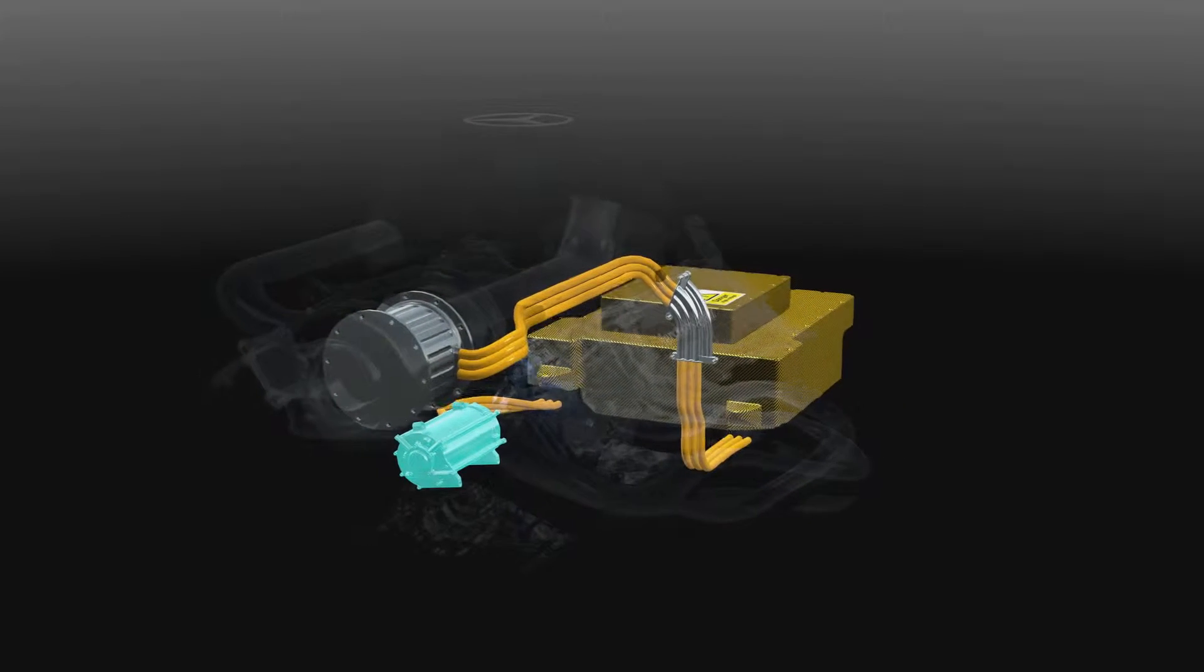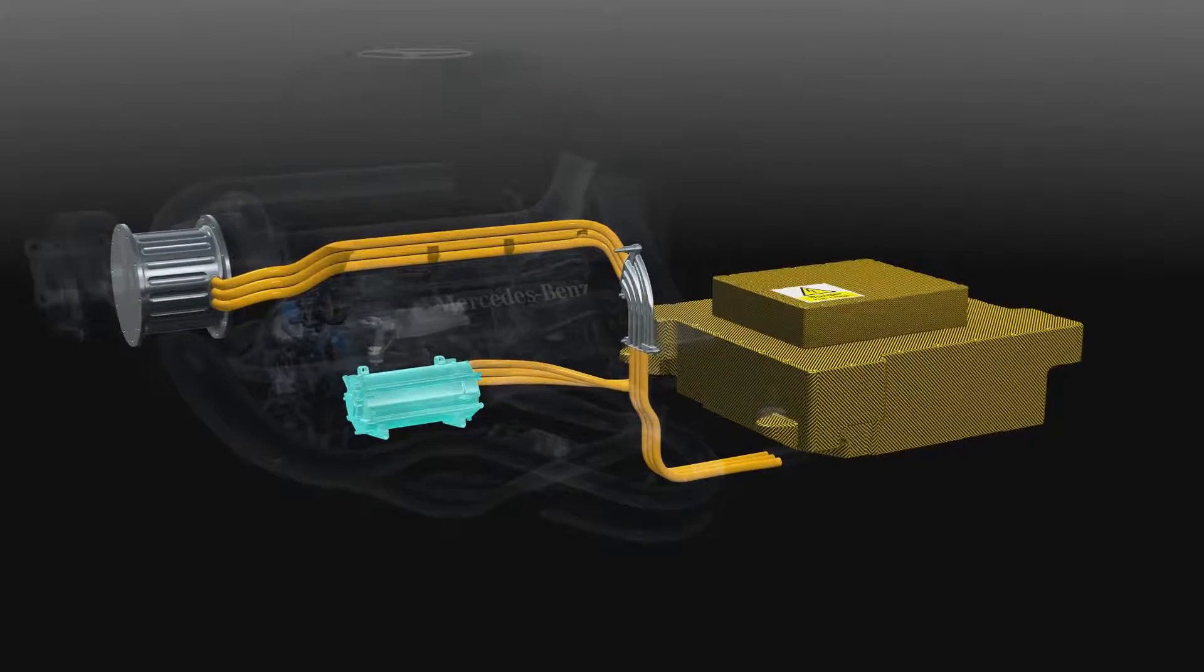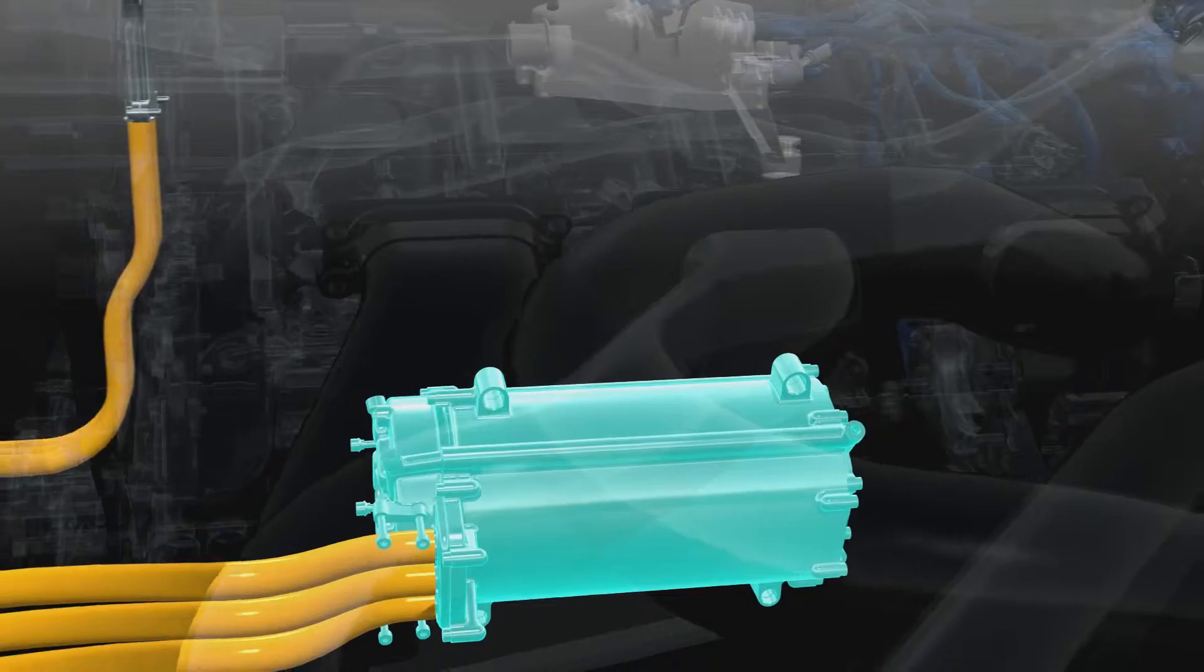The MGU-K delivers up to 160 horsepower for 33 seconds per lap, equivalent to a Mercedes C220 CDI.